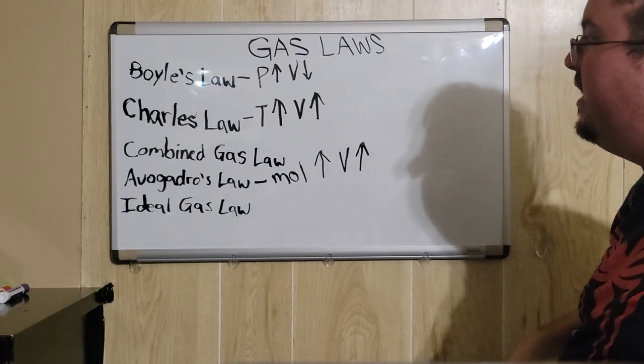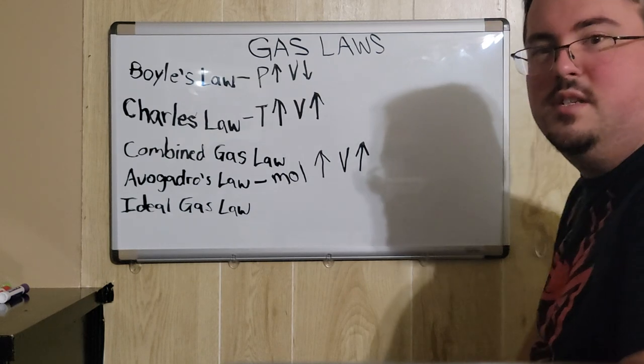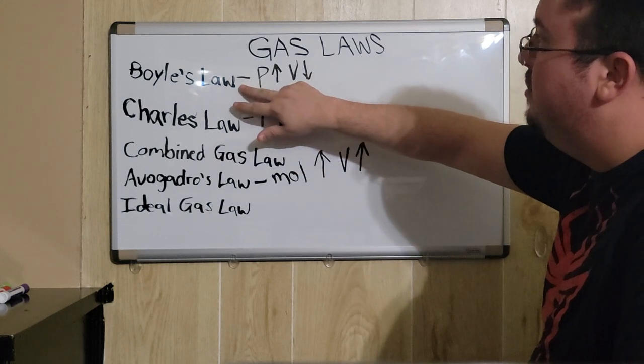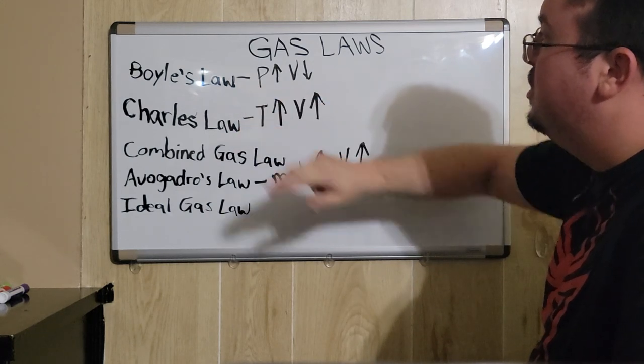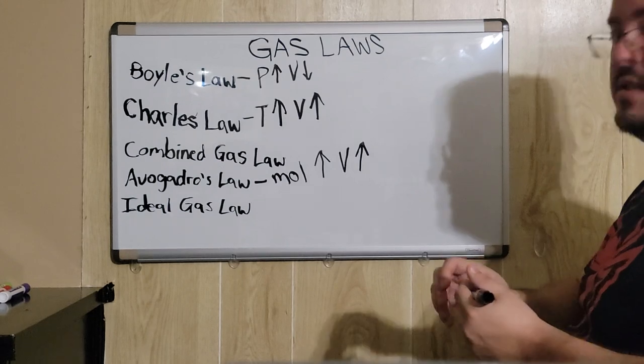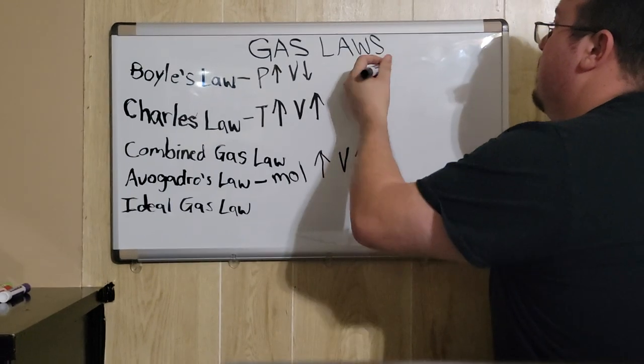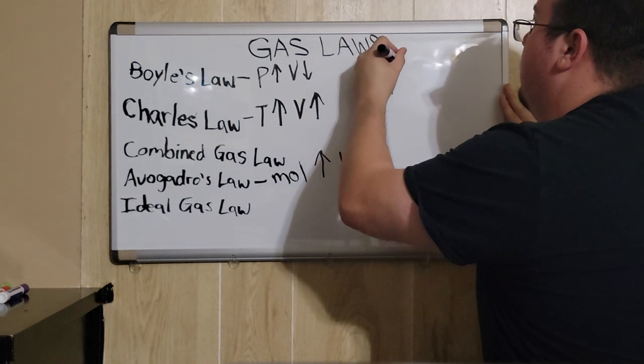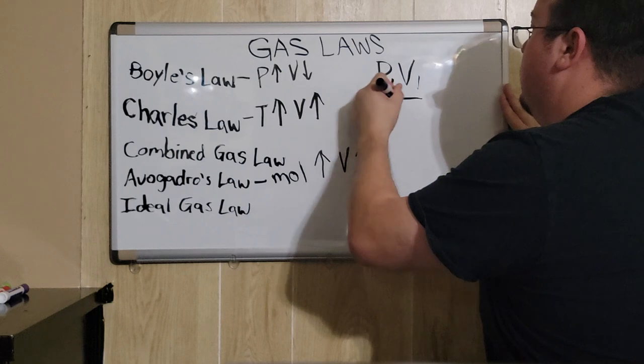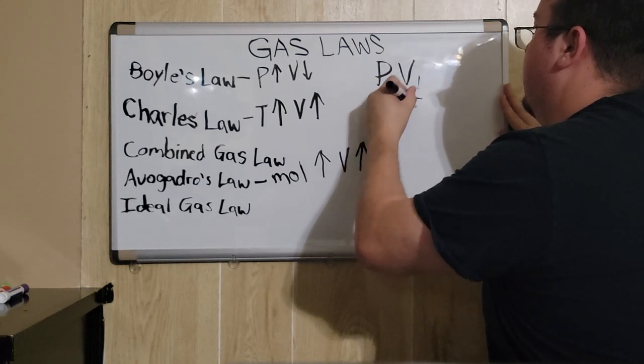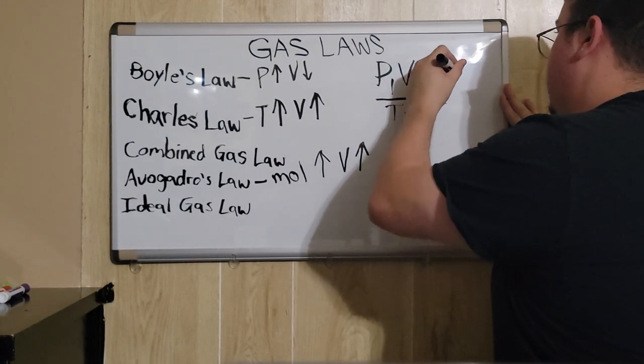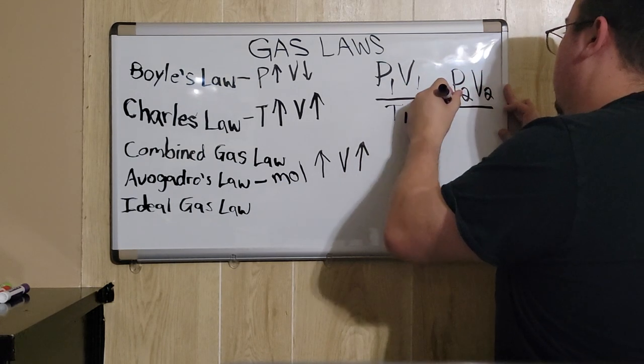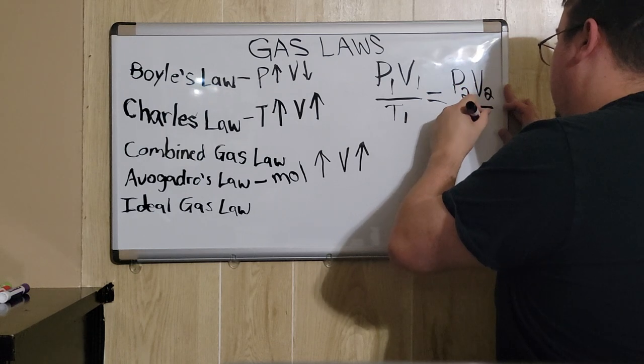Next you have combined gas law, which is fairly straightforward. It actually combines both Boyle's law and Charles law. In that sense, you have P1 times V1 over T1 equals P2 times V2 over T2.